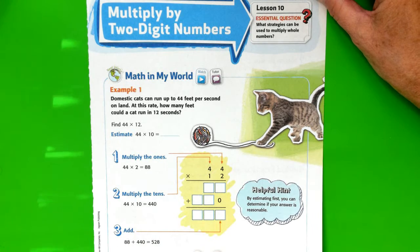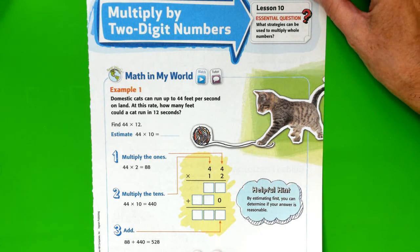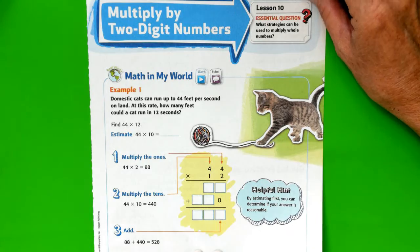Chapter 2, Lesson 10. I think last lesson in this chapter: multiply by two-digit numbers.